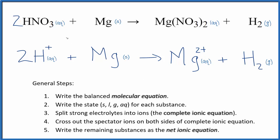This is Dr. B with the balanced net ionic equation for dilute nitric acid plus magnesium metal. Thanks for watching.